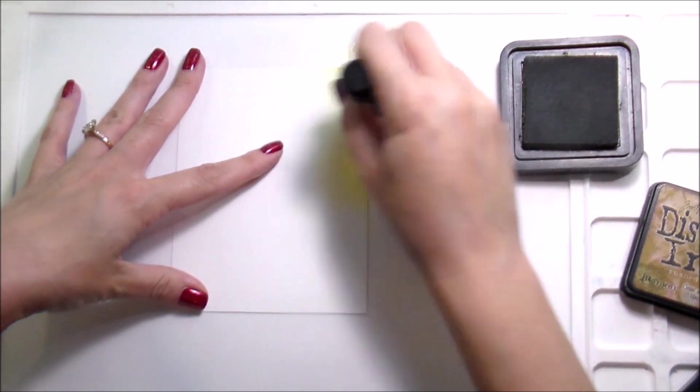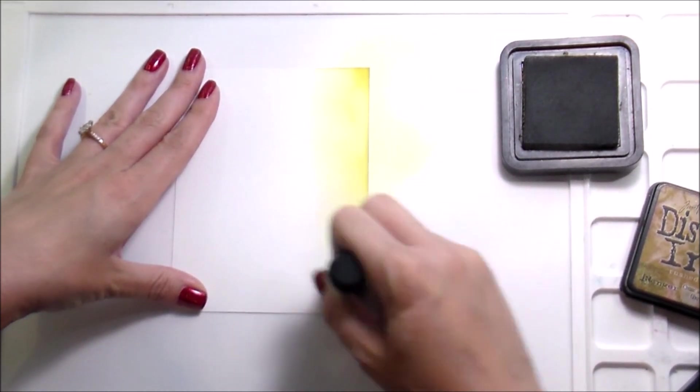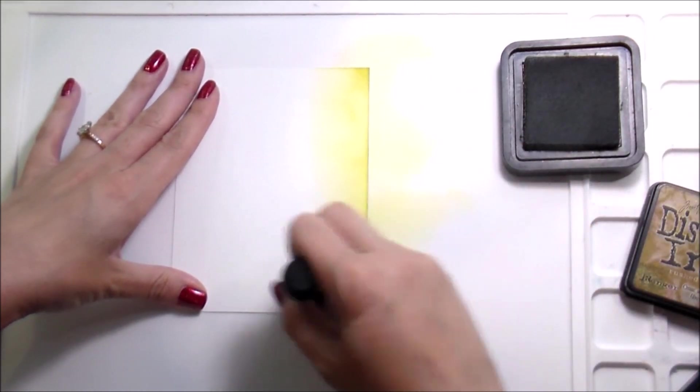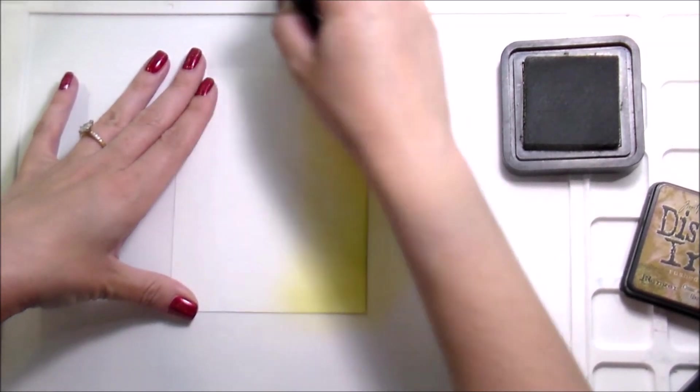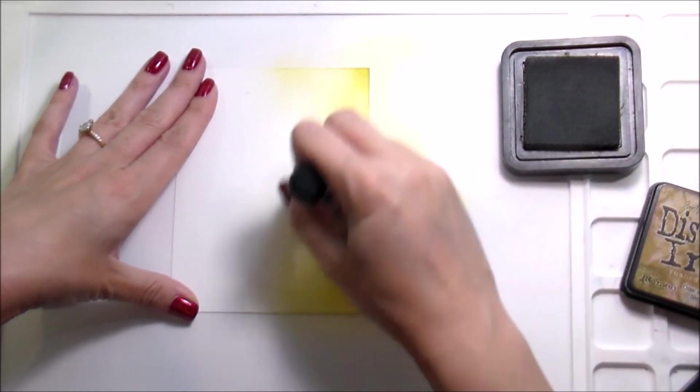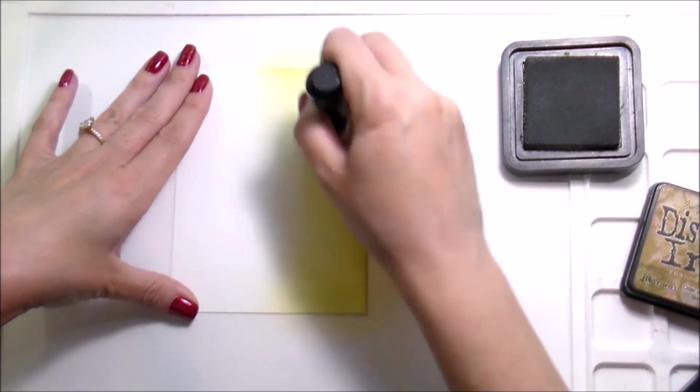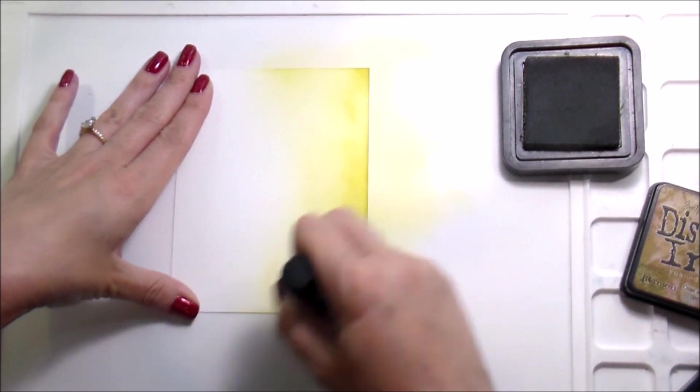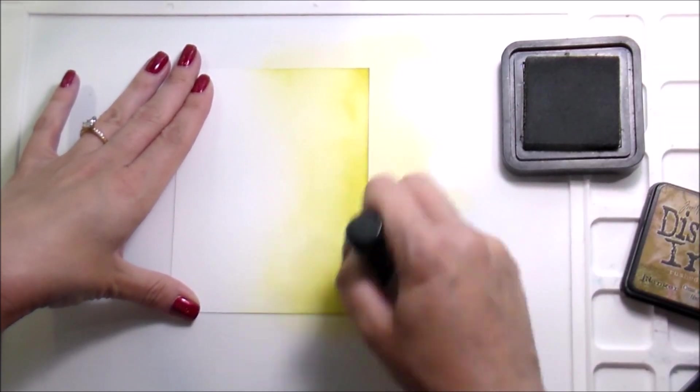But I also get bored very easily, so I like to mix up the colors of the backgrounds. I'm using two colors of distress ink for every card I'm making today. I'm going to blend on starting with the lighter color about three quarters of the way up so it blends into white, and then I'll add the darker color underneath that.